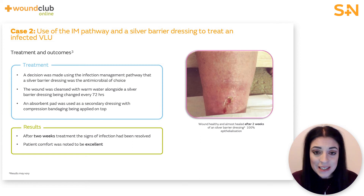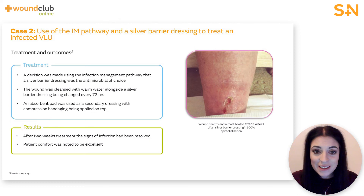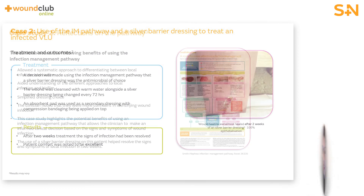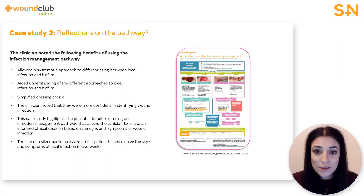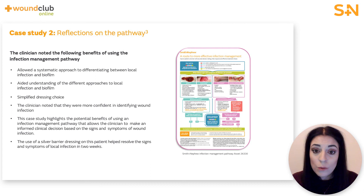The follow-up assessment took place 16 days later, at which stage the wound had reduced in size to four millimetres in length and two millimetres wide with no visible signs of local infection. The wound bed was healthy and almost healed with 100% epithelialisation and low levels of exudate. Patient comfort was excellent, with the patient stating they were very pleased with the progress. The clinician noted that the infection management pathway allowed a systematic approach to differentiating between local infection and biofilm, simplified dressing choice, eased decision making, and increased confidence in identifying local wound infection.